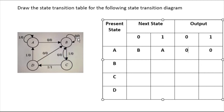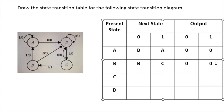Now come to state 'b'. When input is 0, there is no transition and output is 0. When input is 1, it is going to state 'c' and the output is 0.